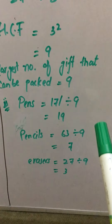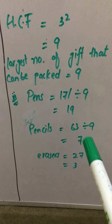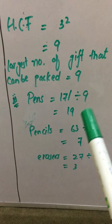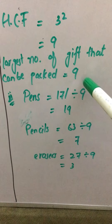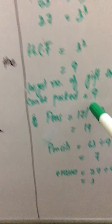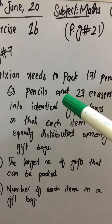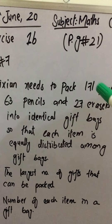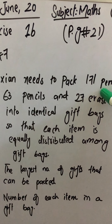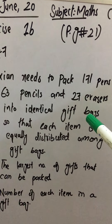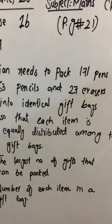To find the number of items in each bag, we will divide 9 into the numbers given: the number of pens, the number of pencils, and the number of erasers.